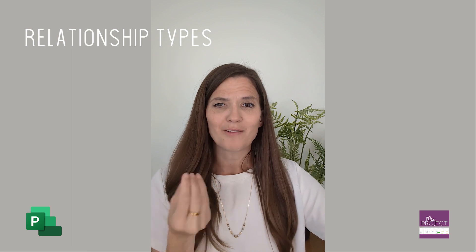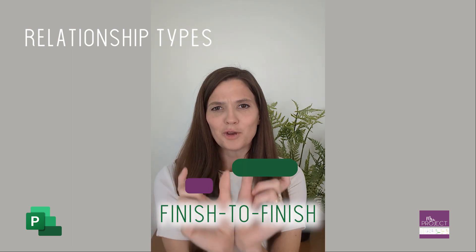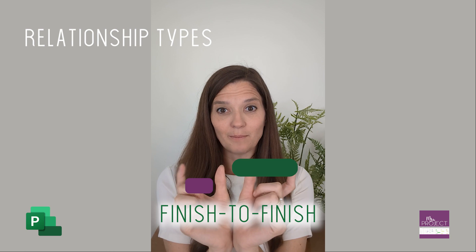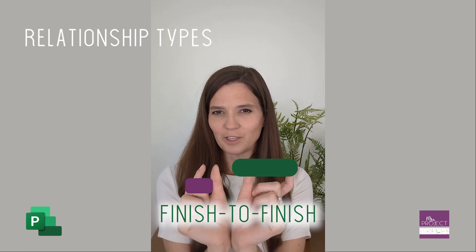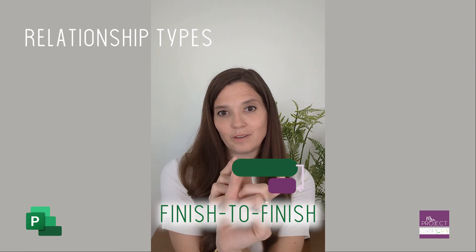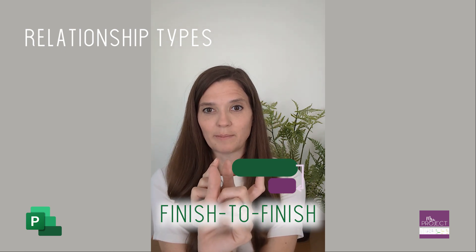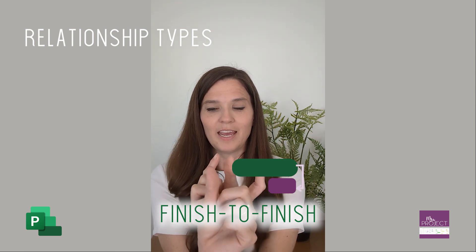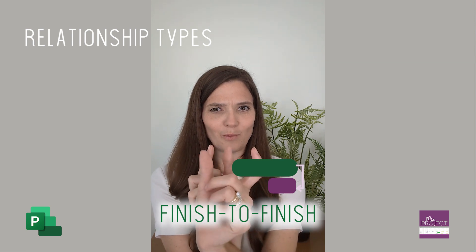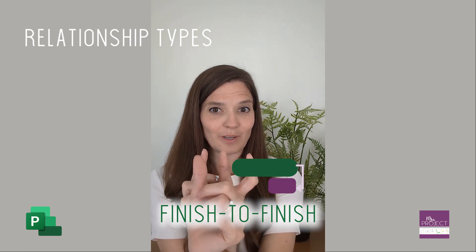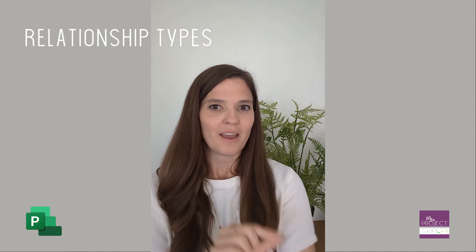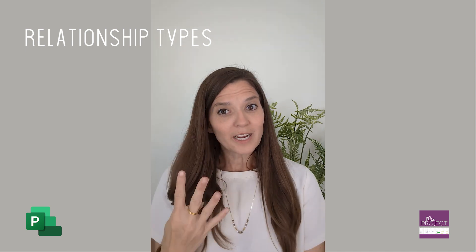You also have finish-to-finish. You have two different tasks of different lengths, but you want them both to finish at the same time. When they just have to finish at the same time, you use finish-to-finish. You can use it when you want to know when to start a task instead of using a negative lag — so there are four types of relationships between tasks.